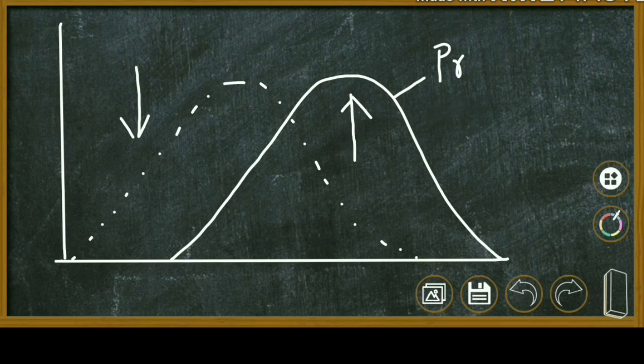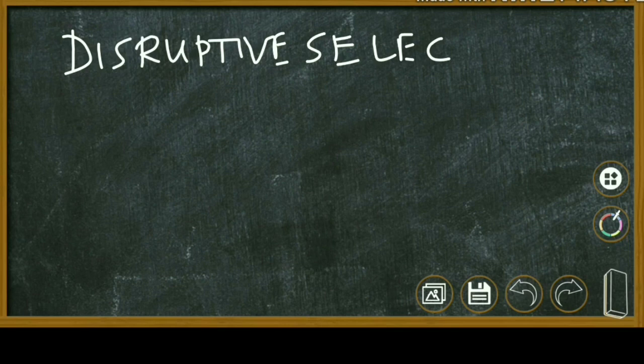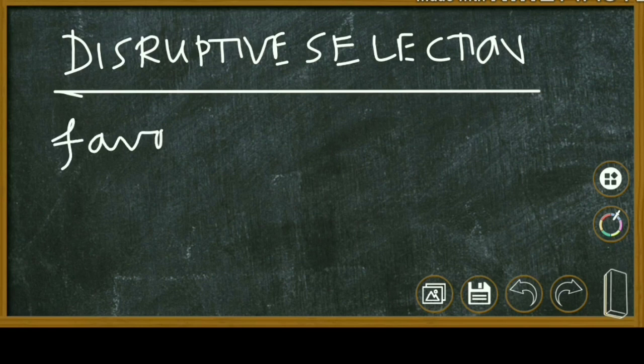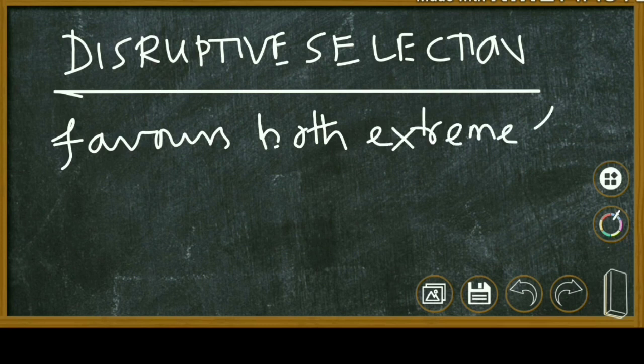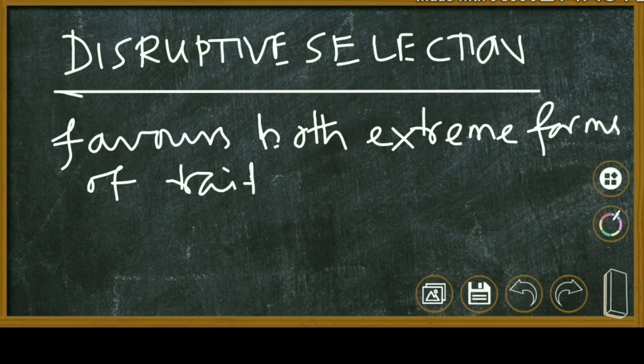And then comes the third one, disruptive selection. Here, natural selection favors both the extreme forms of a trait but not the intermediate forms. Hence, the population breaks up into several different adaptive forms leading to formation of subpopulations. This type of natural selection tends to increase the variations within a population.